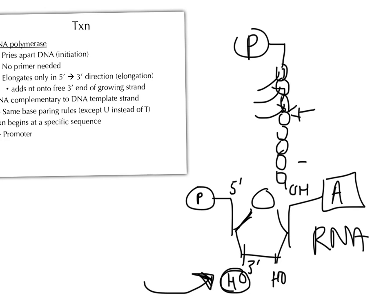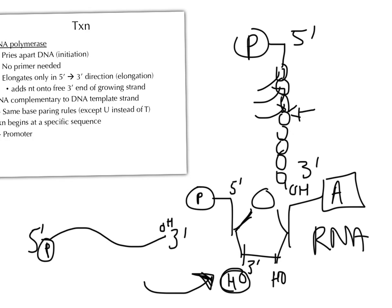The three prime end is where the free hydroxyl group is and the five prime end is the phosphate-containing side. So usually drawn as a single-stranded molecule, the phosphate-containing side is the five prime and the hydroxyl side is the three prime. RNA polymerase can only jump on at the hydroxyl side and add onto that.